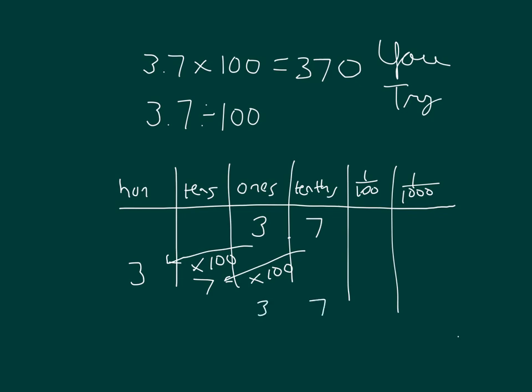When 3 and 7 tenths was divided by 100, 3 divided by 100 already is hundredths. And the 7 tenths divided by 100 is thousandths. So our answer there is 0.037. Check over your work.